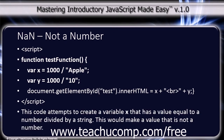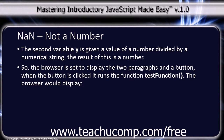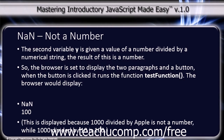This code attempts to create a variable x with a value equal to a number divided by a string, which makes a value that is not a number. The second variable y is given a value of a number divided by a numerical string, and the result of this is a number. When the button is clicked it runs the test function, and the browser would then display 'not a number' and 100, because 1000 divided by 'apple' is not a number while 1000 divided by 10 is 100.